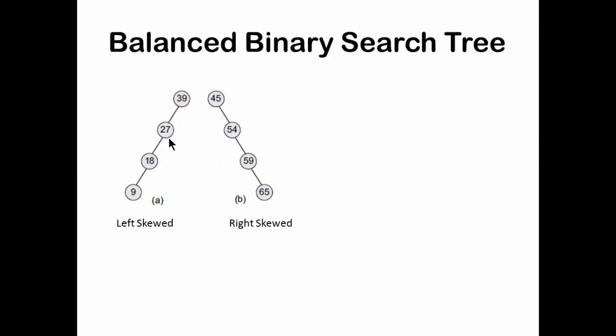Binary search trees, if not properly managed, can become skewed. For example, if 39 is made the root and all other elements are smaller, they will only populate the left-hand side. Or if all elements are greater, they will only populate the right-hand side. In such a case, you cannot search in order of log base 2N. If you are searching 65 and there are only 4 nodes, you have to make 4 comparisons, so the time complexity is order of N.